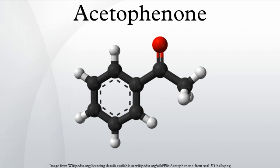Commercially significant resins are produced from treatment of acetophenone with formaldehyde and base. The resulting polymers are conventionally described with the formula C6H5C(O)(CHx)(CH2)xN, resulting from aldol condensation. These substances are components of coatings and inks.